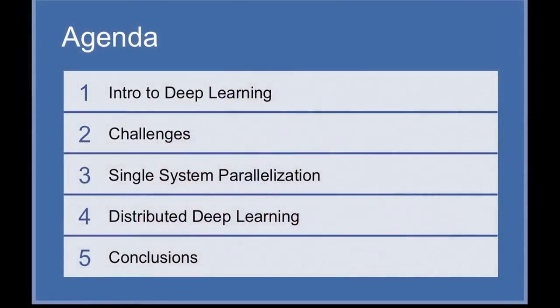What we're going to do here is the world's most economical introduction to deep learning, because we don't have a ton of time. But you need to know a little bit about it to understand what's hard about it. We'll go into what systems people like me are doing in machine learning, why performance matters and how it's hard, what we've done in single system image parallelization, the beginnings of distributed deep learning, and then we'll wrap up.